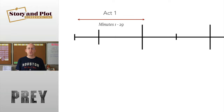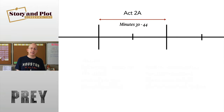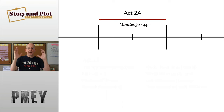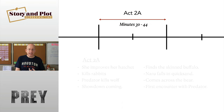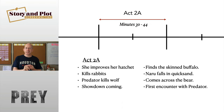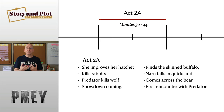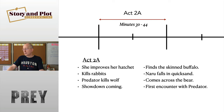After Act One we go to Act Two A. She improves the hatchet by putting a rope on it, she gets better at killing rabbits, and we intercut with the Predator — promising a showdown. Then she finds the skinned buffalo, which will come back, and she falls into quicksand, which will also come back.